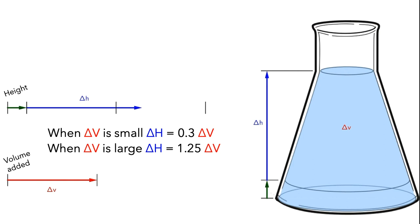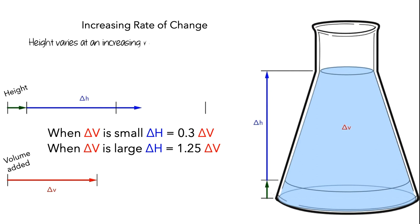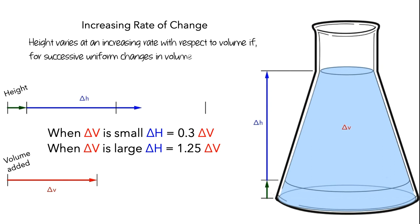This is what it means to have an increasing rate of change. In this scenario, we say that height varies at an increasing rate with respect to volume if, for successive uniform changes in volume, the corresponding changes in height increase. This might be a little complicated to sort out, so let's take a closer look.